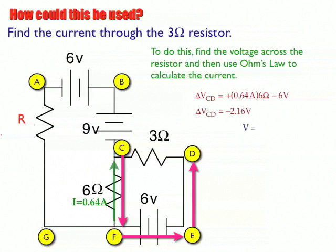Now I can use Ohm's law to find the current. So V equals IR, negative 2.16 volts equals I times 3 ohms. And now I can find the current to be negative 0.72 amps as I go across the 3 ohm resistor, which is the same result we've been getting in this example problem.